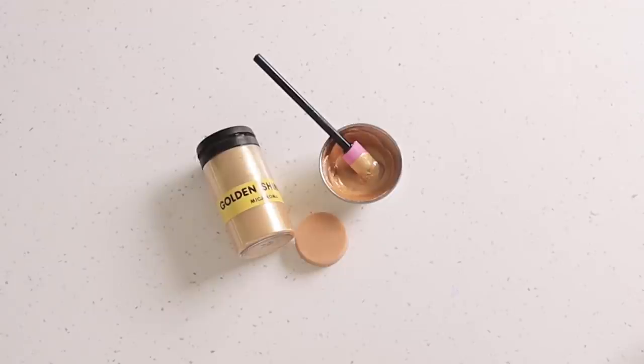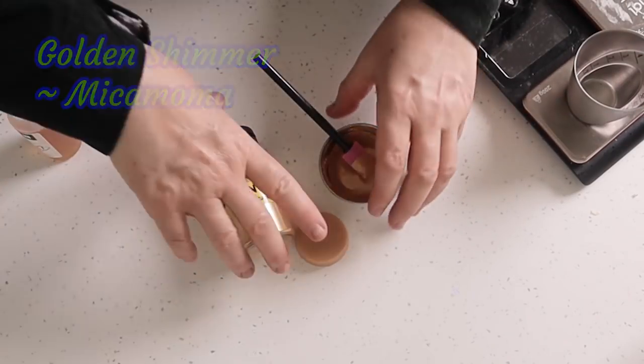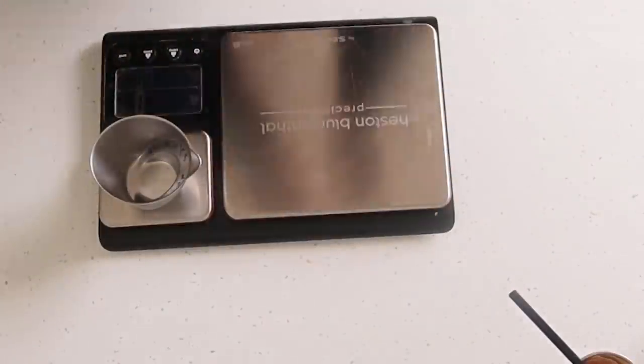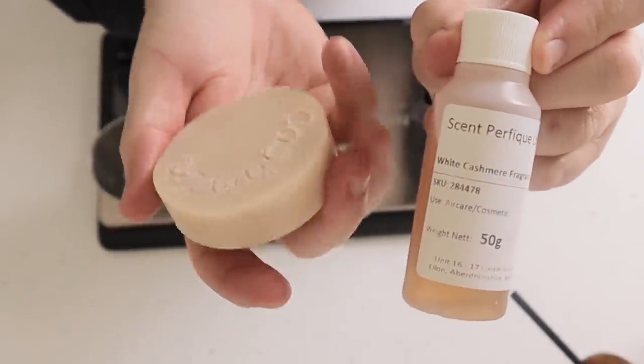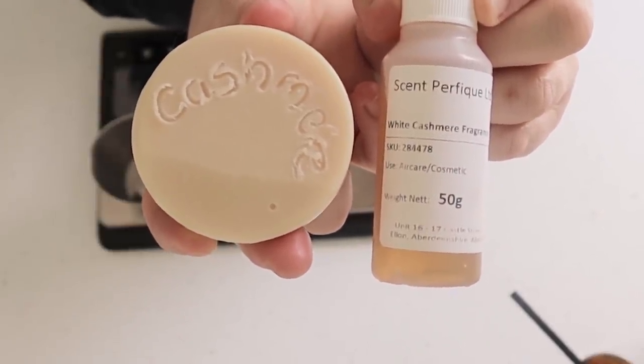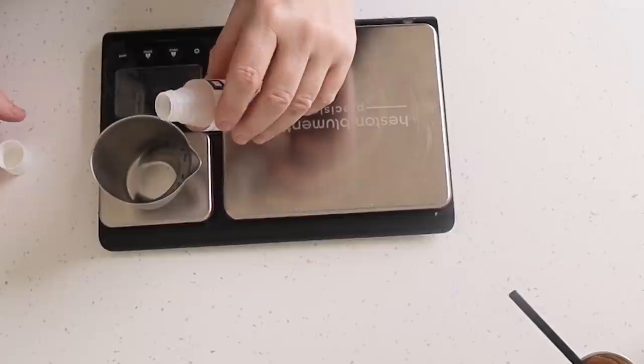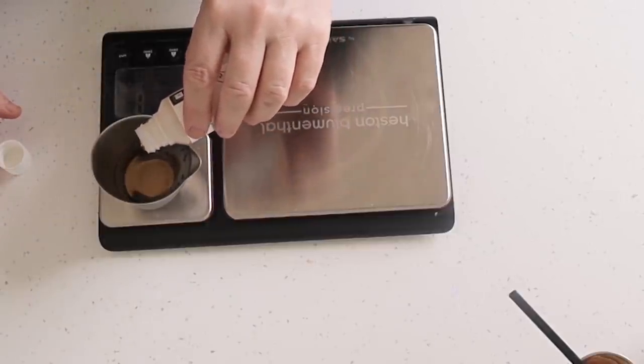So now we can make up the main soap and I'm just going to do a single color because I want the flowers to stand out really well. So I'm using Golden Shimmer from Micamama and my fragrance oil is White Cashmere from Saint Perfique in the UK. And I've tested this in a small sample like I do with all of my fragrance oils before I use them and you can see it discolors a tiny little bit. My soap batter is actually whiter than that sample and so I'm happy that I know whether it discolors, I know if it rices and I know whether it's going to accelerate or not.